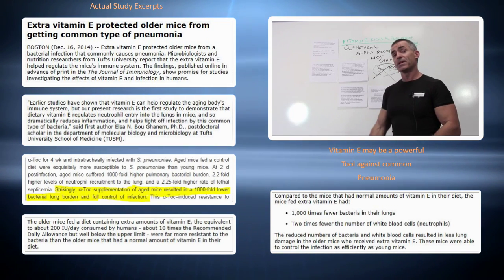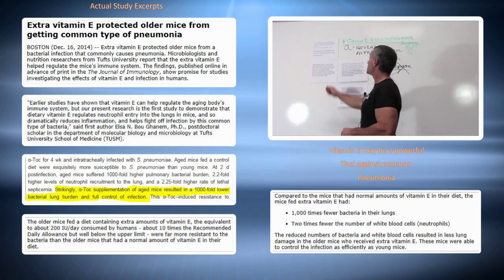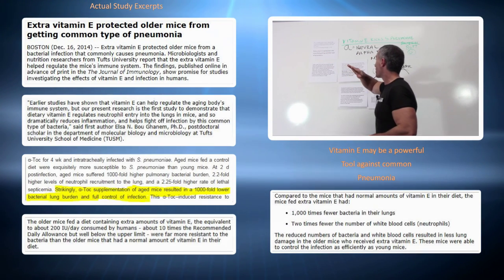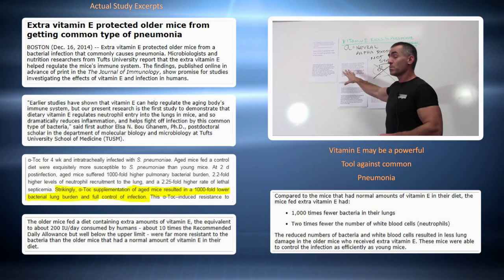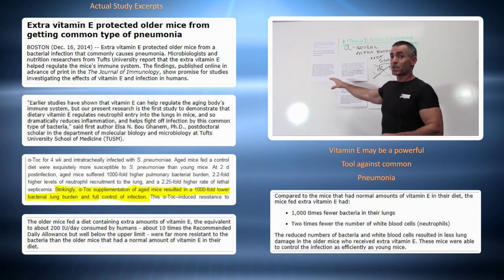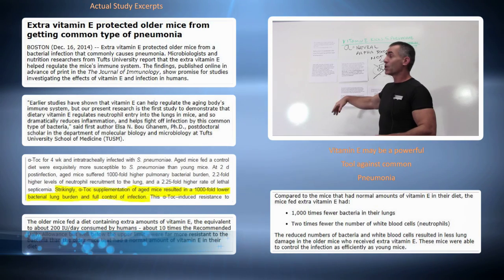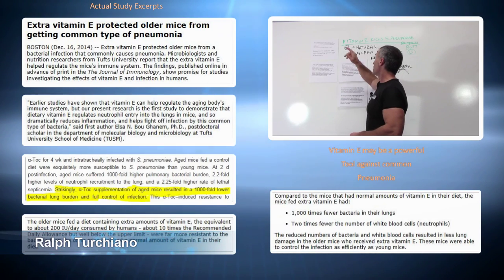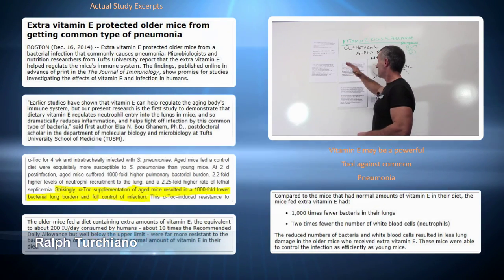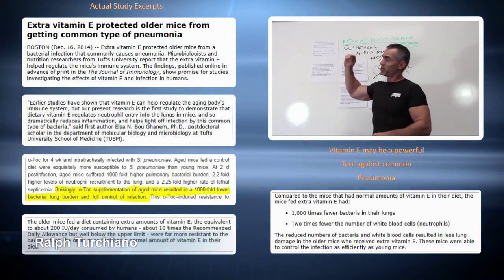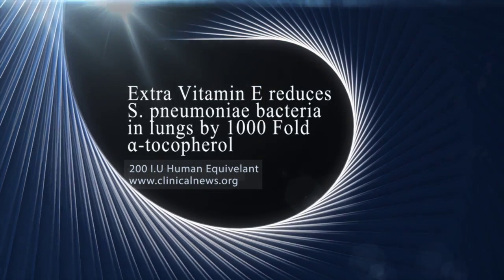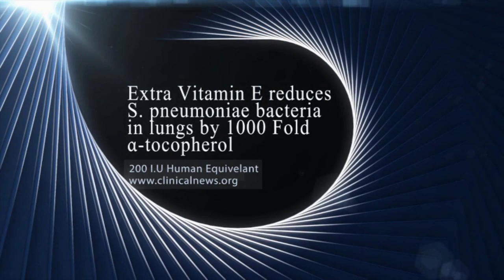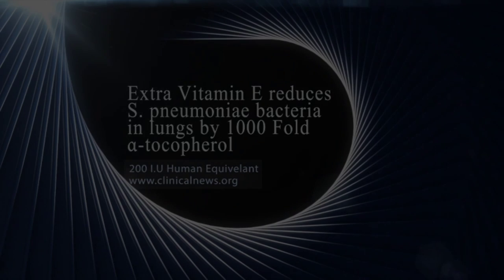So if you want to hedge your bet against pneumonia, and this study in animals should translate to the same in humans, just 200 IUs of extra natural vitamin E could go a long way. So pneumonia has a new adversary: natural vitamin E.